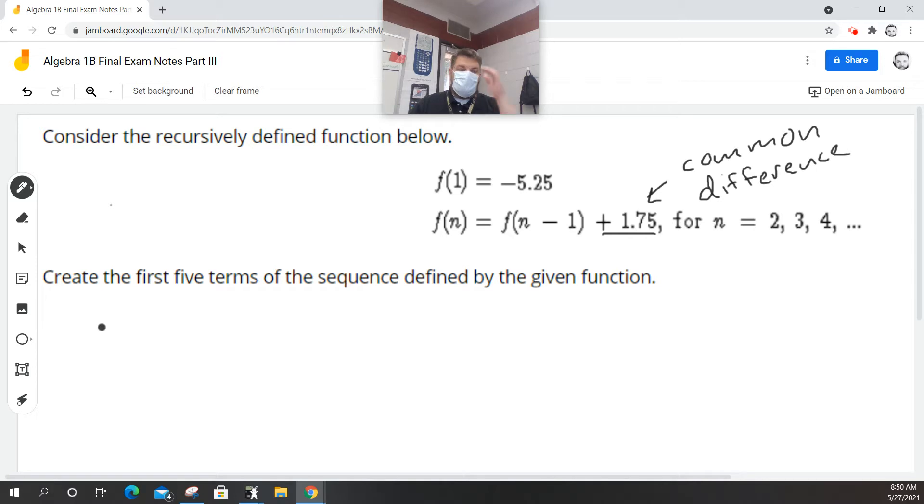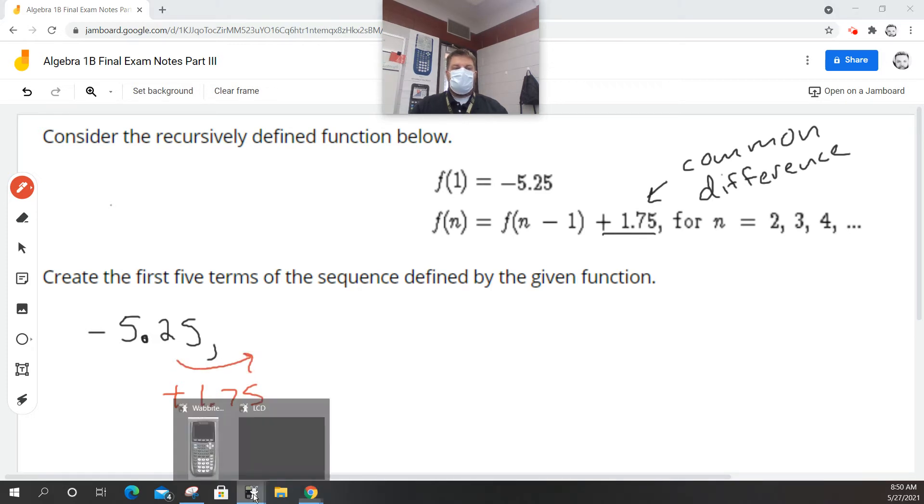So my first term is just going to be negative 5.25. Okay, now to get my next term, what I'm going to do is I'm simply going to add 1.75 to that term. Okay, so let's do that.